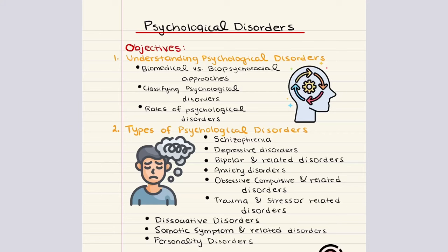Hello everybody, my name is Iman. Welcome back to my YouTube channel. Today we're going to be covering chapter 7 for our MCAT Behavioral Science Playlist. This chapter is titled Psychological Disorders and we're going to cover the following objectives: first, Understanding Psychological Disorders, where we'll compare and contrast biomedical versus biopsychosocial models, discuss how to classify disorders, and talk about the most common psychological disorders in the United States.